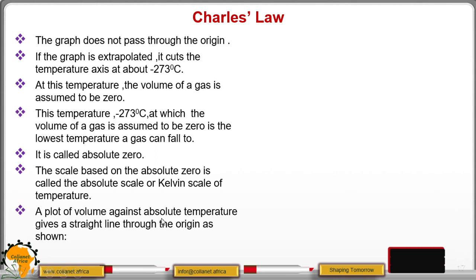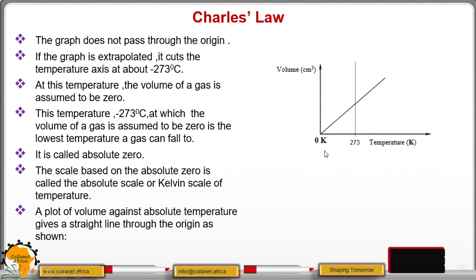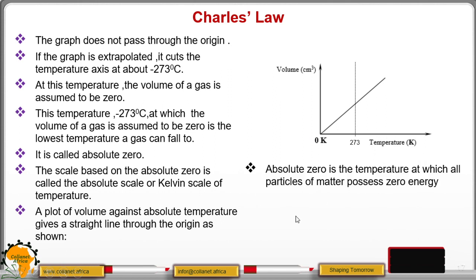When you plot a graph of volume against absolute temperature, it gives a straight line through the origin. We have seen that negative 273 degrees is absolute zero. So if you consider the temperature in Kelvin starting from zero Kelvin, then you will have a straight line through the origin. This shows that volume and temperature are directly proportional — but remember, we are talking of absolute temperature. Absolute temperature can be defined as the lowest temperature a gas can fall to.